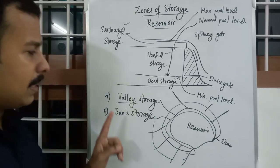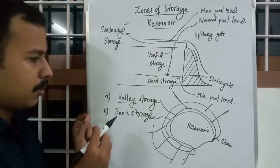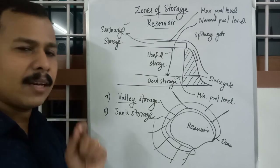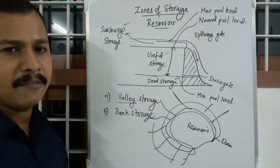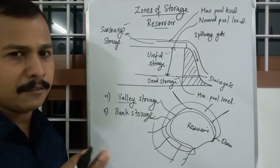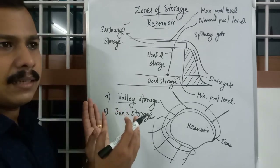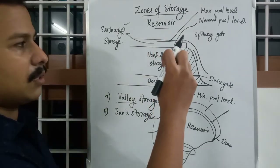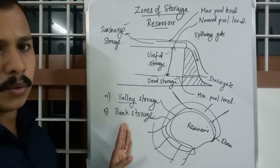One more important point: the volume of water in Valley Storage and Bank Storage cannot be calculated using the standard elevation-depth graph or elevation-storage graph. You have to find it using a different map or trial-and-level method. Only when the reservoir is empty can you find the accurate amount of valley and bank storage.